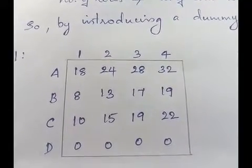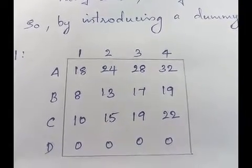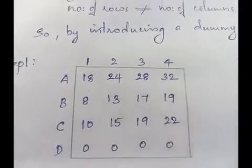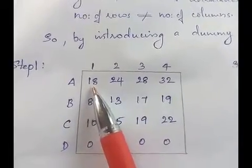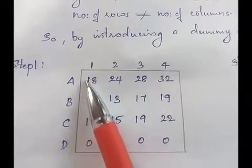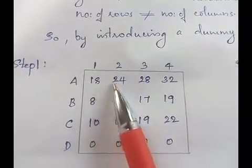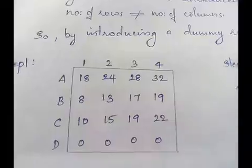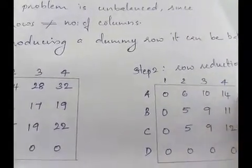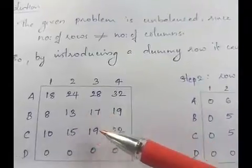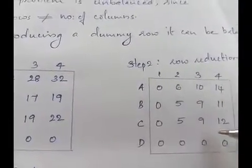Now we can apply the Hungarian method. The first step is row reduction — that is, reducing each element of the row by the minimum element in that row. Here in the first row, 18 is the minimum element, so we reduce 18 from each element in that row. The same is done with the remaining rows to get the row-reduced table.